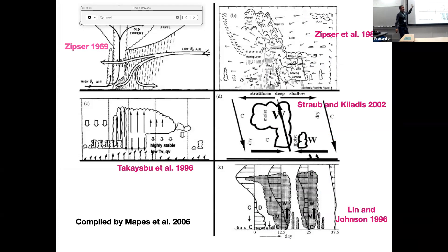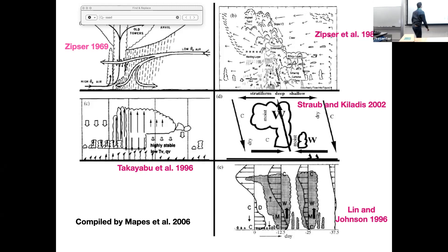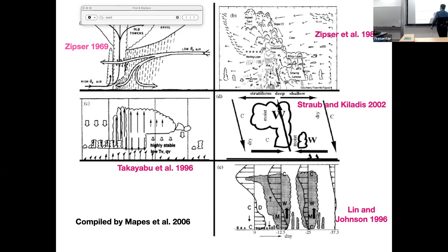These three cloud types — shallow, congestus, and deep — are present in all systems from the mesoscale upward. Congestus clouds moisten the environment and precondition it so that later clouds can make it above the freezing level and go up to the level of neutral buoyancy near the tropopause. Following that you get stratiform rain that evaporates, cools the boundary layer, and restores the inversion layer. These three cloud types appear in mesoscale systems, synoptic-scale waves, and the Madden-Julian Oscillation — all moving in different directions but sharing the same cloud structure.